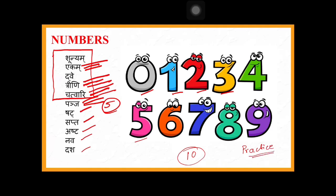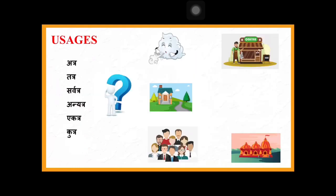Numbers from one to four change form based on gender; from five onwards they stay the same regardless of gender. In detail study we'll see how trini becomes tisra in strilinga and trayaha in pullinga. For now, just know the numbers: pancha, shat, sapta, and so on in Sanskrit.